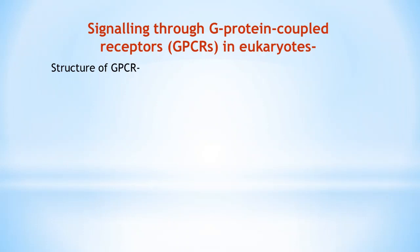GPCRs are classified into six classes, from class A to class F. Ligands of GPCRs include proteins and small peptides, derivatives of amino acids and fatty acids, photons of light, and all the molecules that we smell or taste. About 150 types of GPCRs are orphan receptors — receptors whose ligands are still unknown.